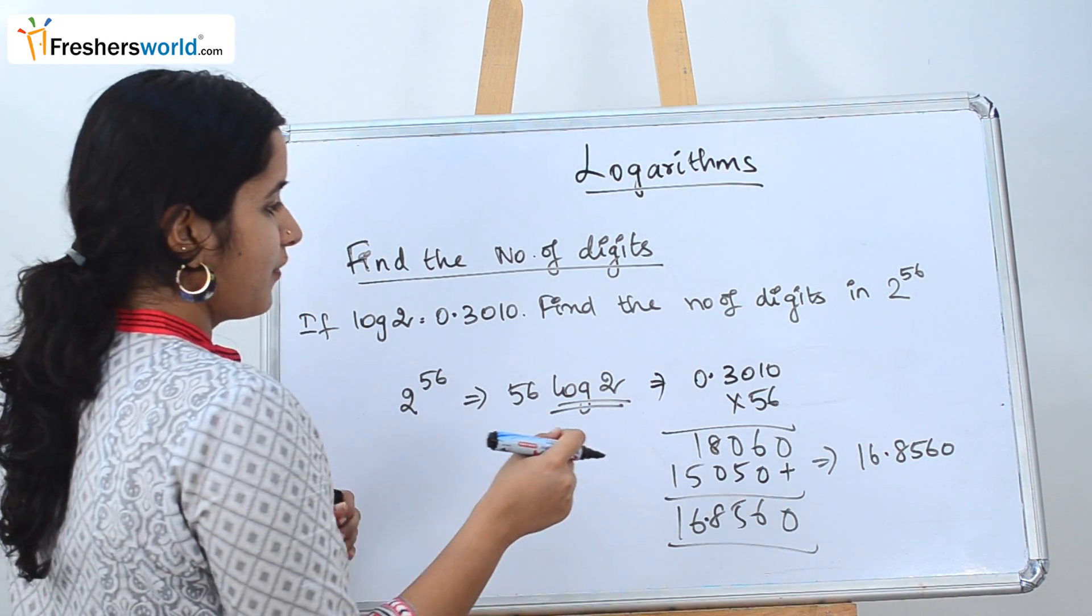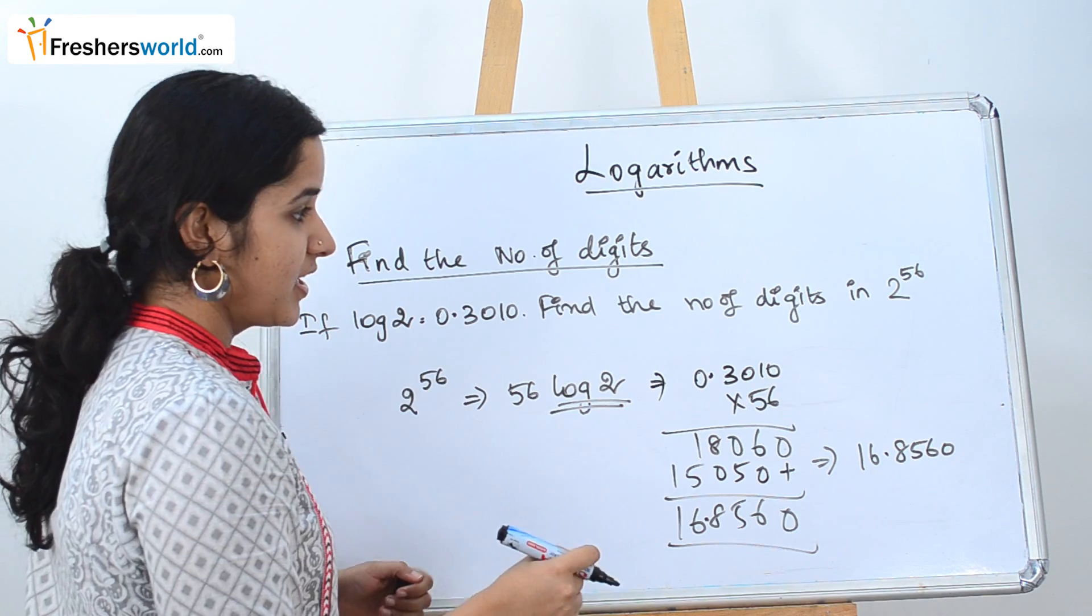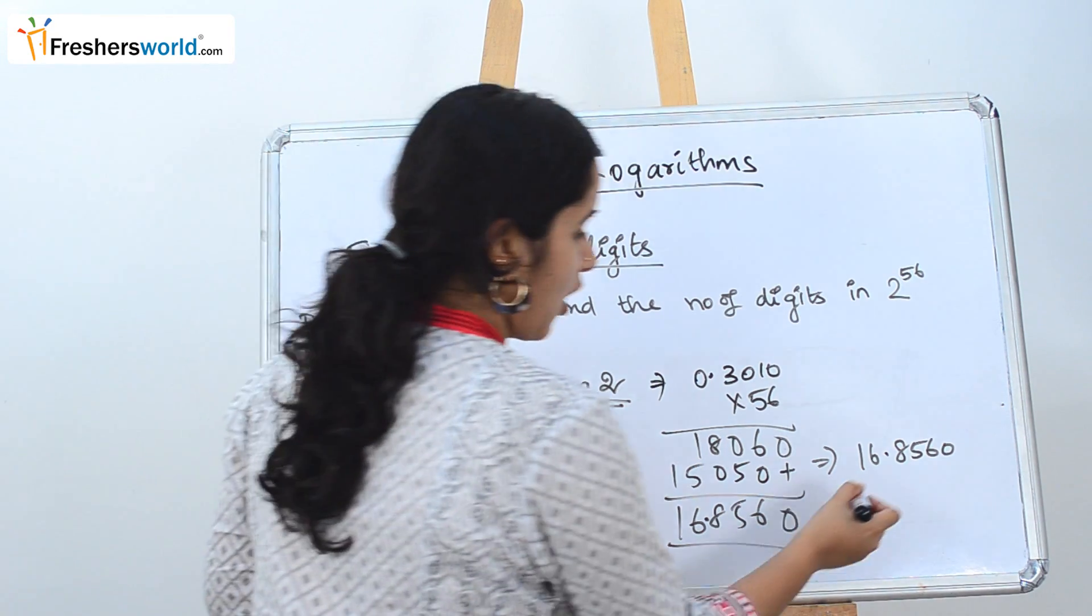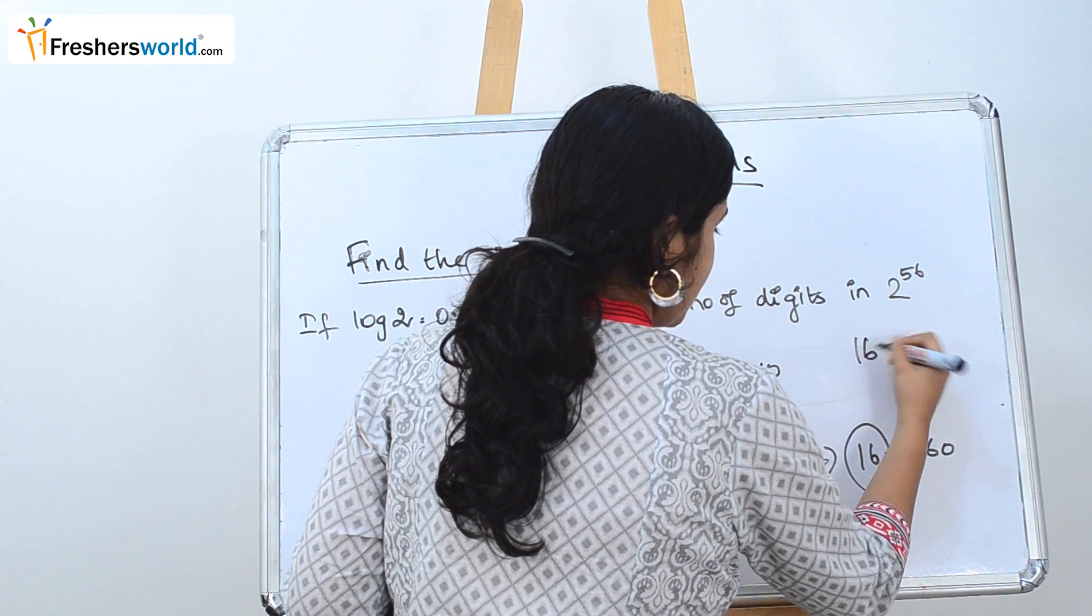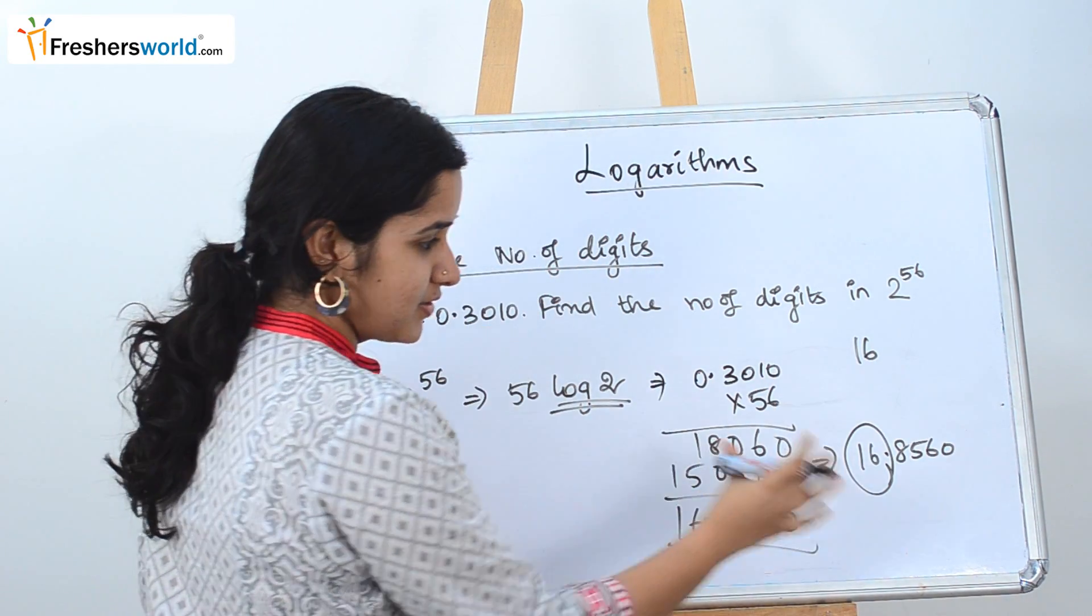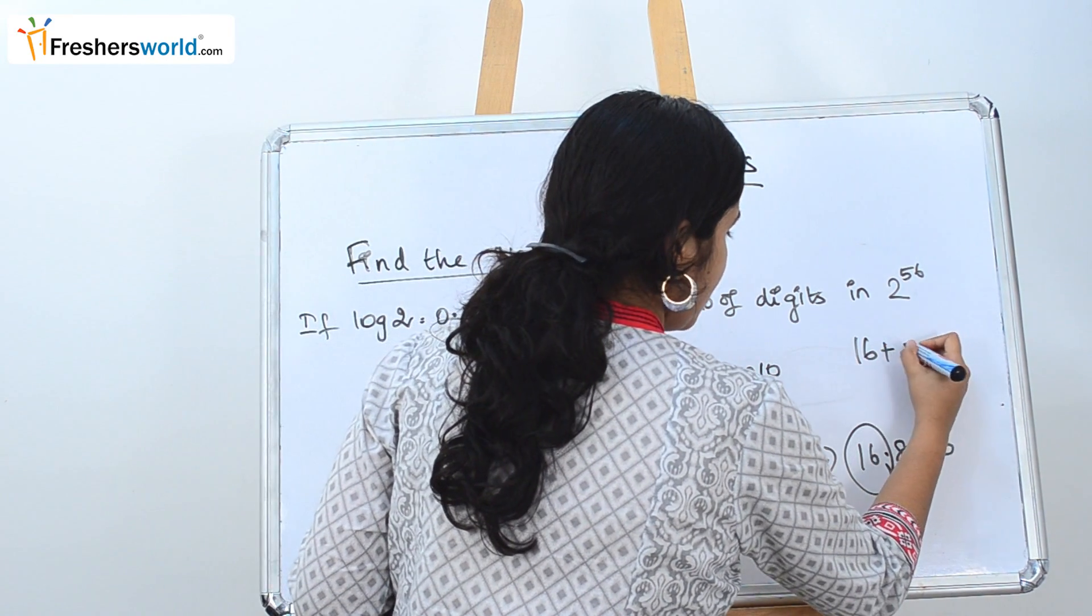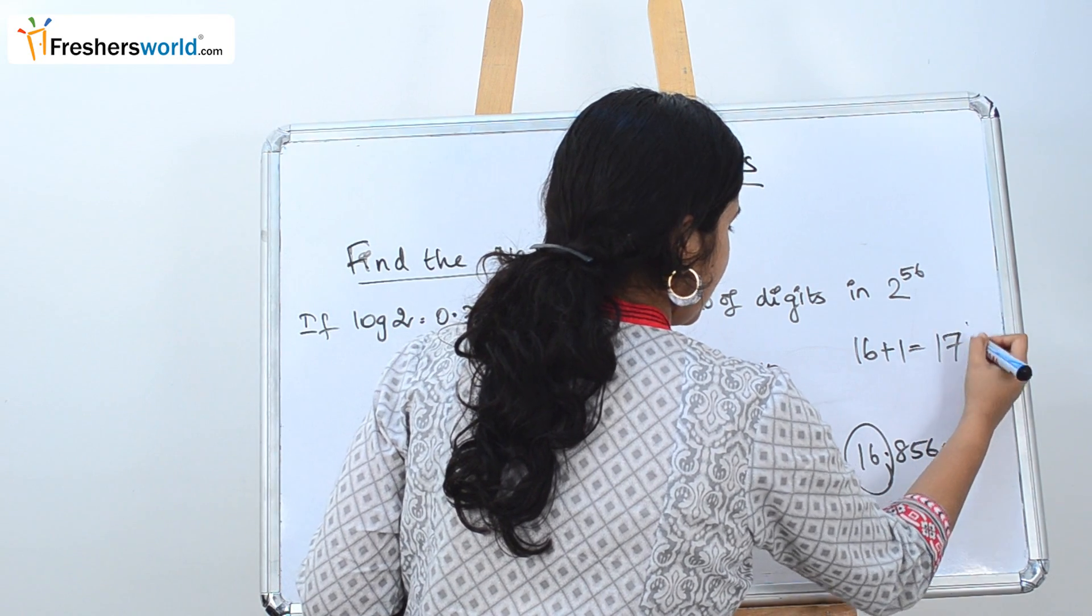So what are they asking you to find? They are asking you to find the number of digits. How do we find the number of digits? It's always the characteristic plus 1. So 16 is the value we find in the characteristic of the given number plus 1. So the number of digits is nothing but 17.